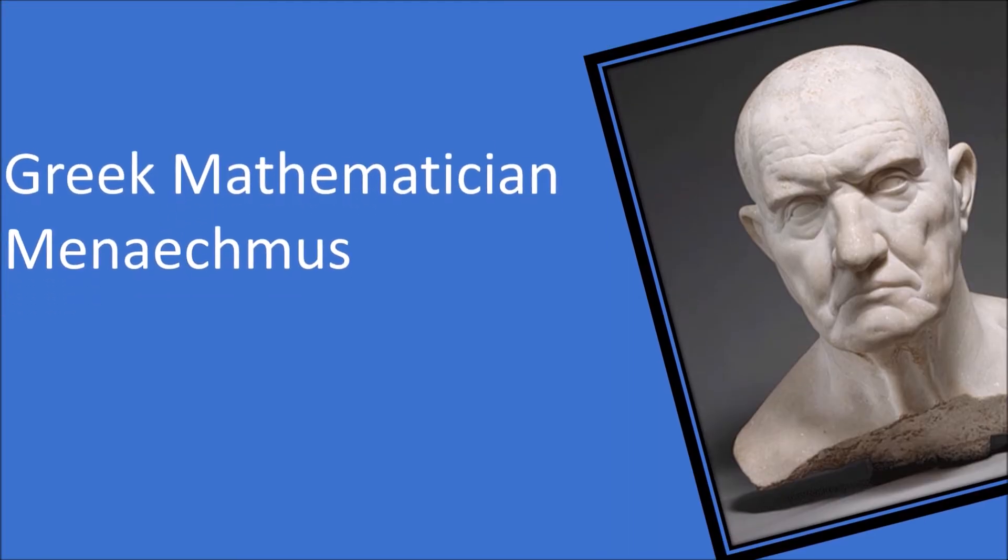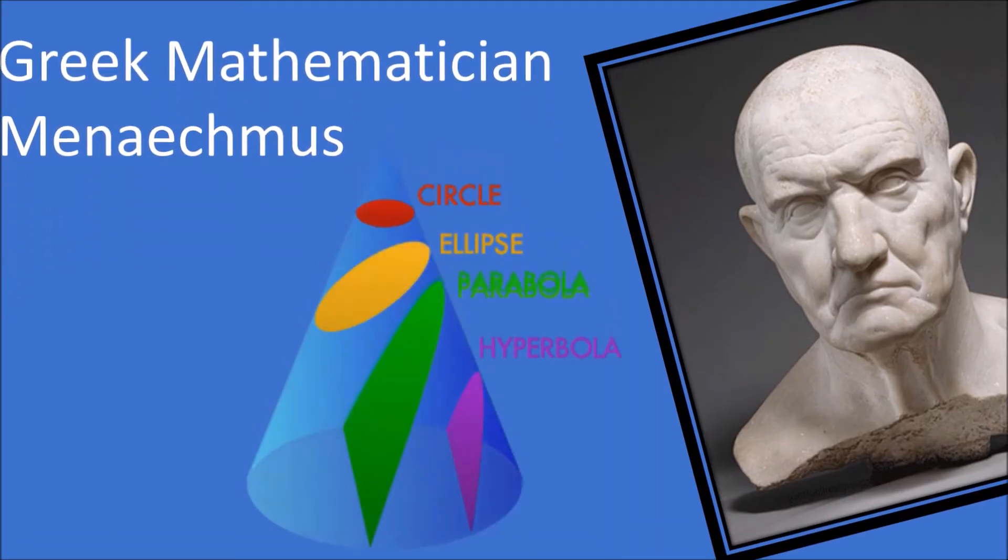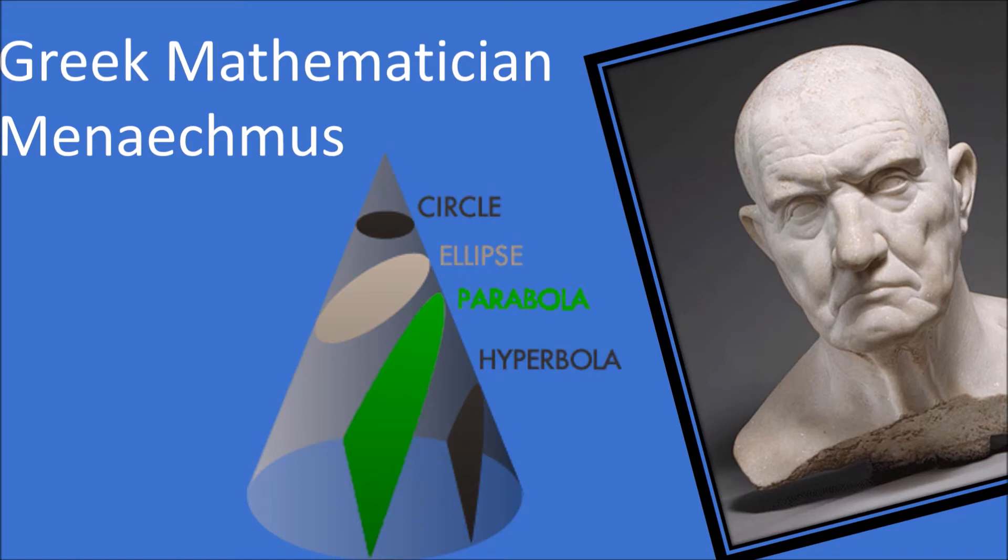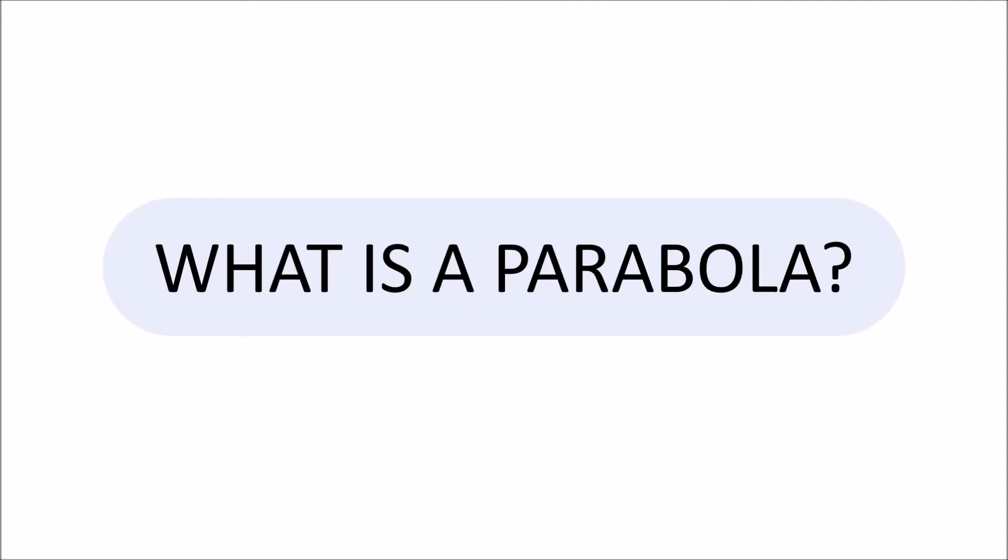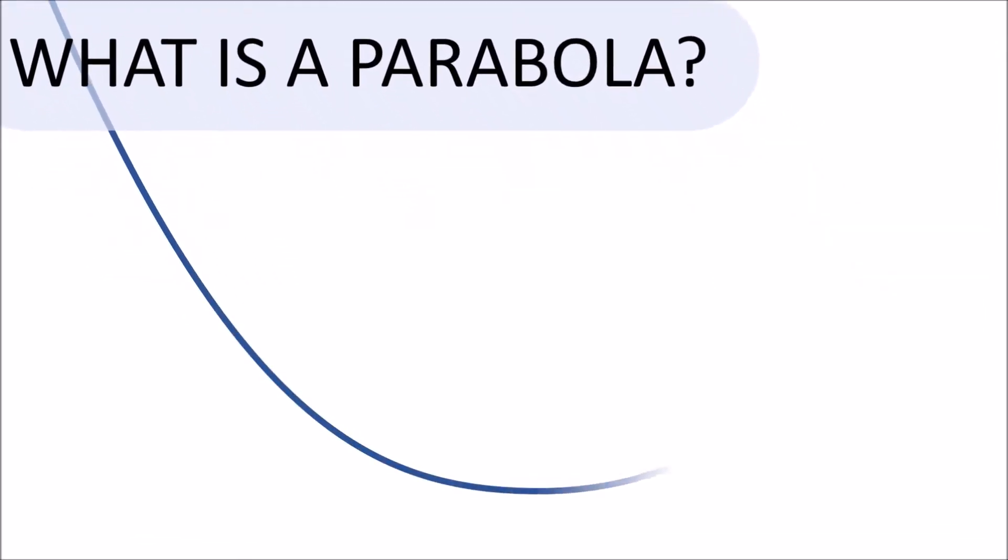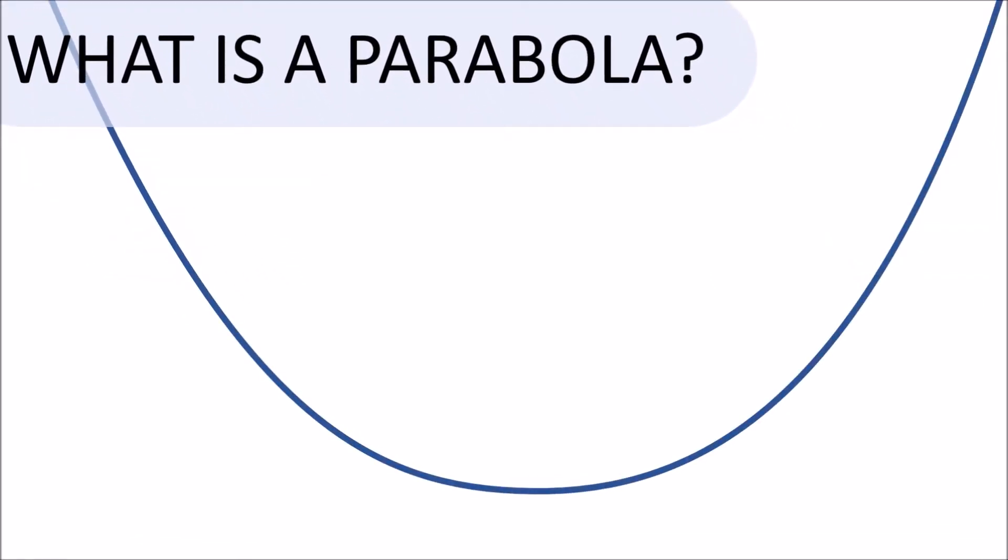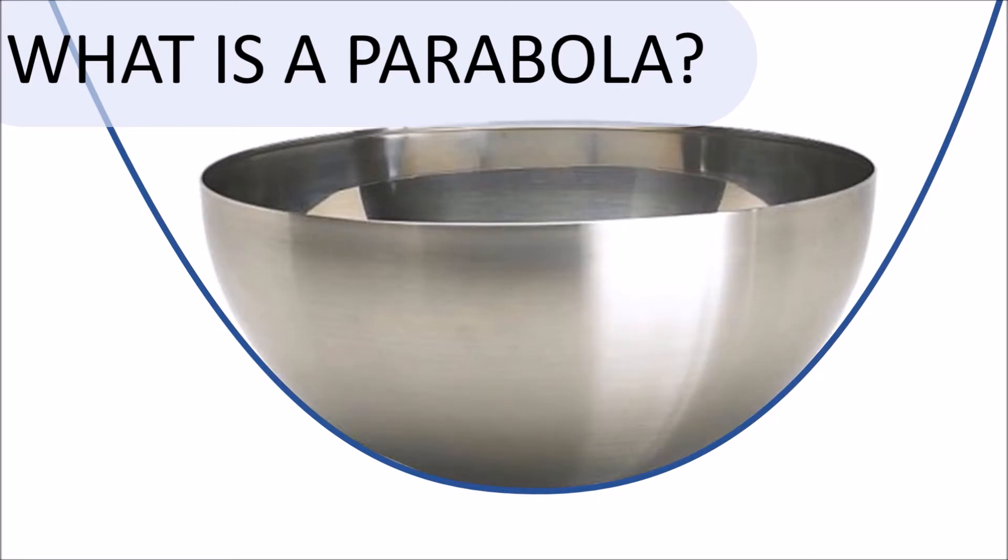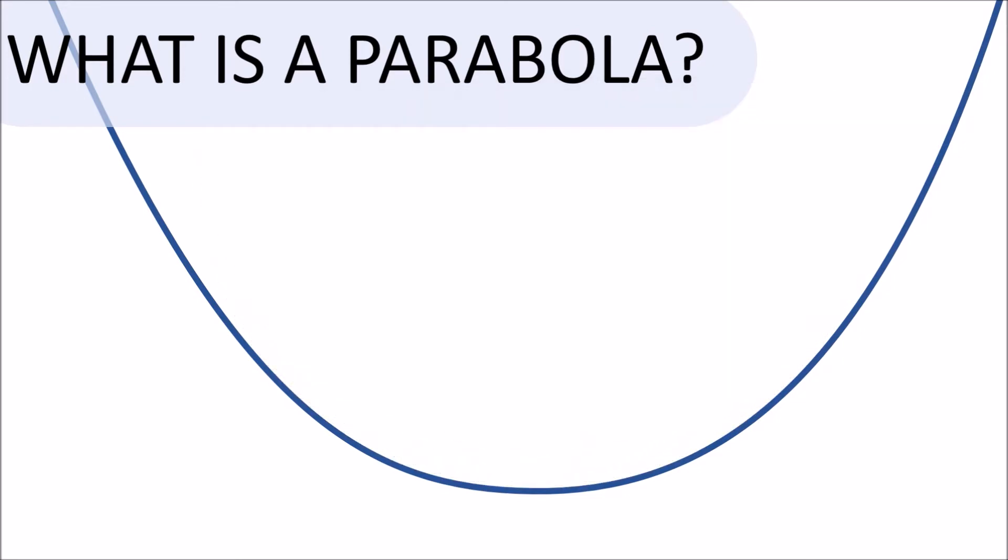The Greek mathematician Menaechmus is credited with discovering that the parabola is a conic section. What is a parabola? A parabola is a continuous curve that looks like an open bowl where the sides keep going up infinitely.